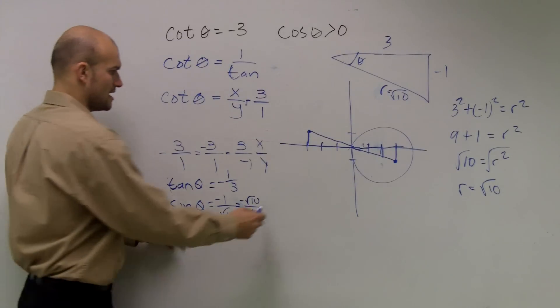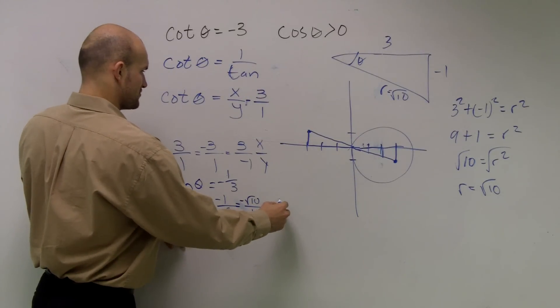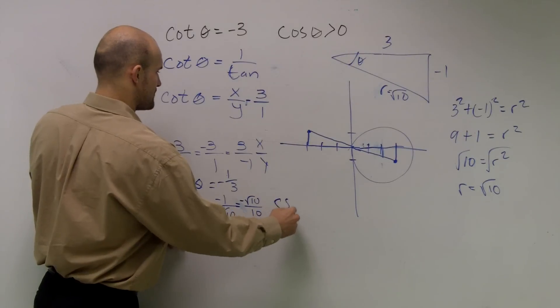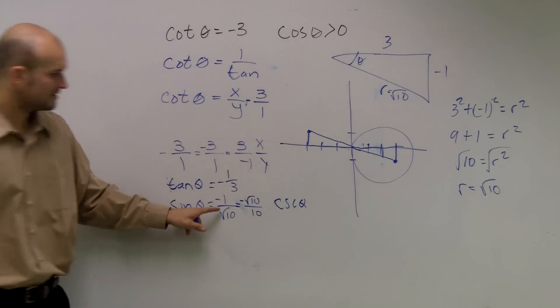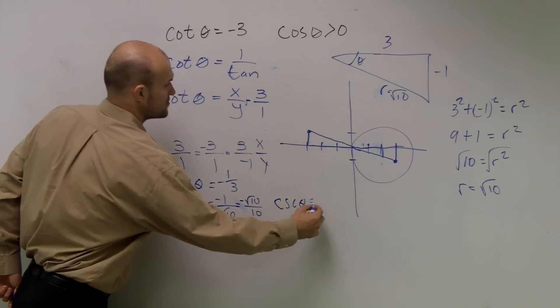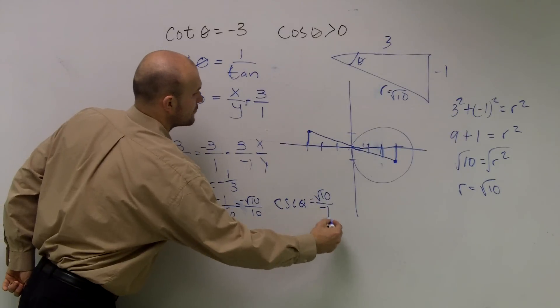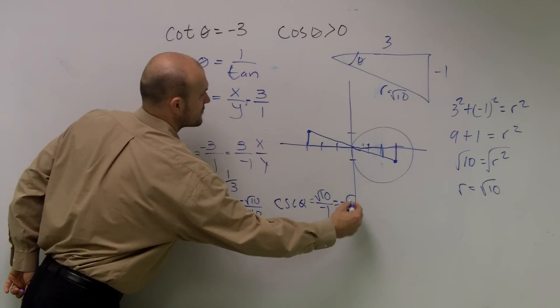So therefore, if sine of theta is this, we can do the reciprocal function, which would be cosecant of theta is a reciprocal, which would be radical 10 over negative 1, which equals a negative radical 10.